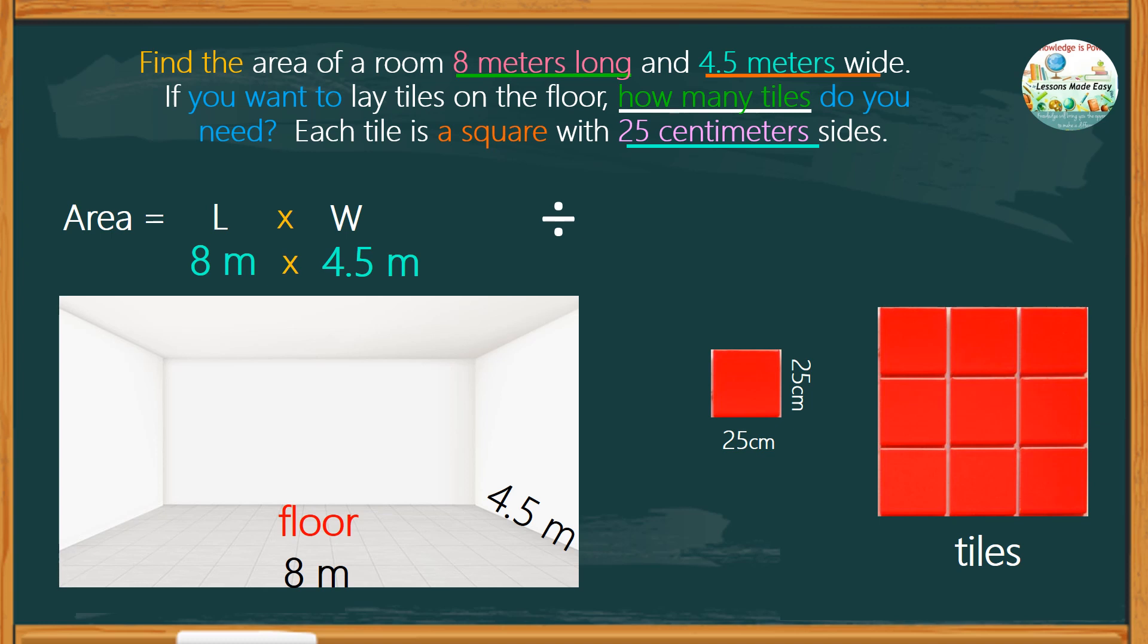Each tile is a square. To find the area, we multiply the side by its side. So, a side of 25 centimeters times 25 centimeters.